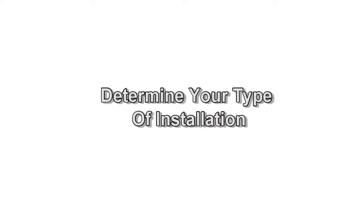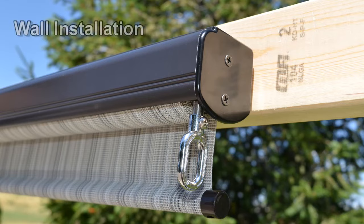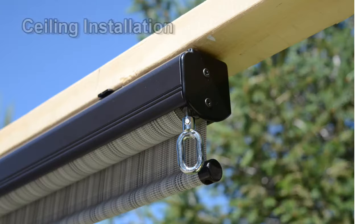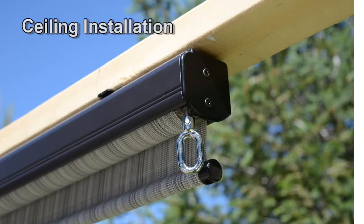Next, you will need to determine your type of installation. If you are installing your shade on a wall or beam as shown here, you are performing a wall installation. If you are installing your shade underneath a beam or overhang as shown here, you are performing a ceiling installation.